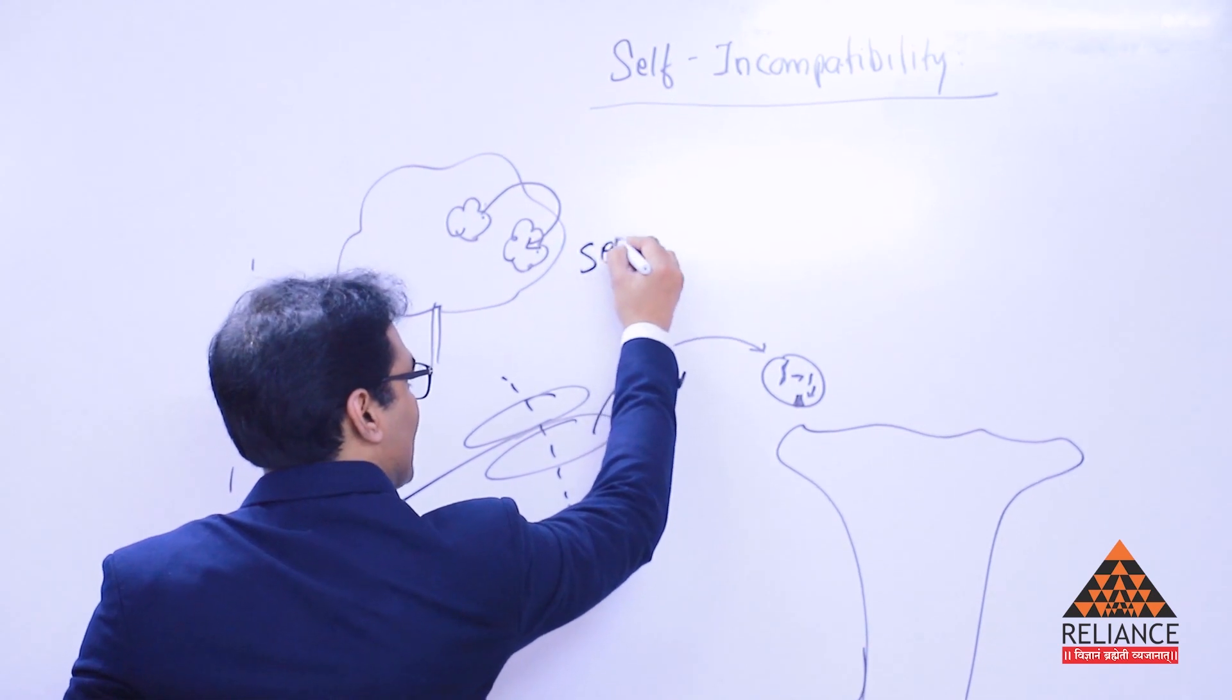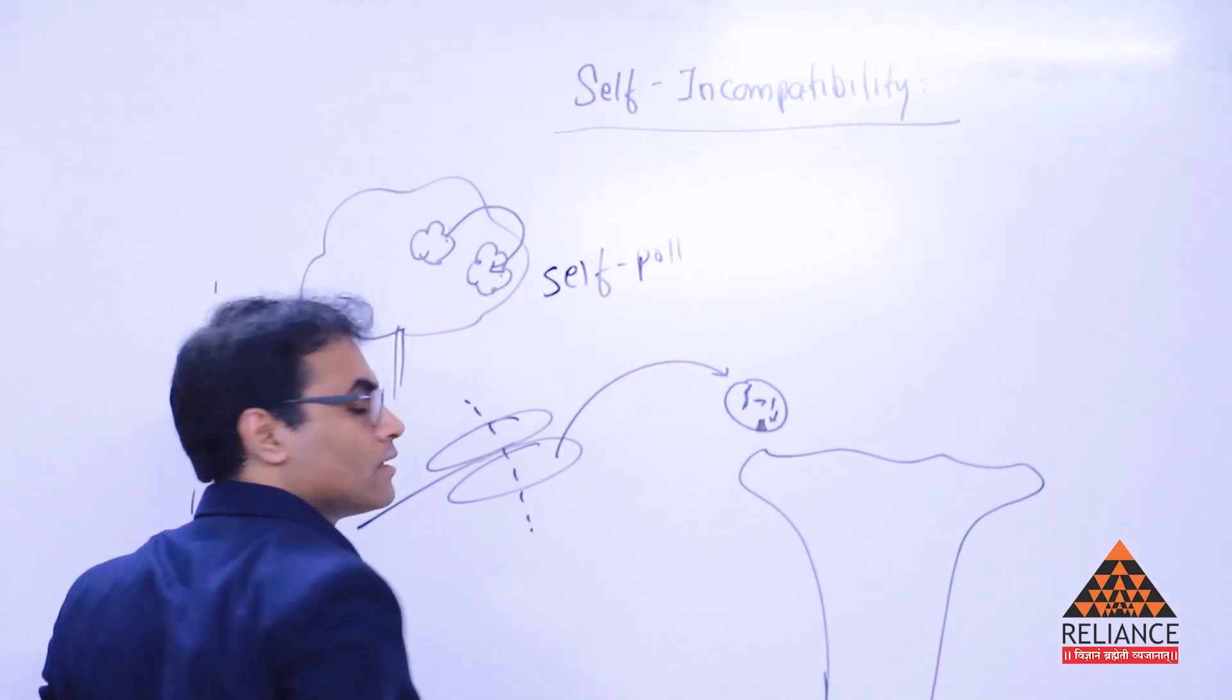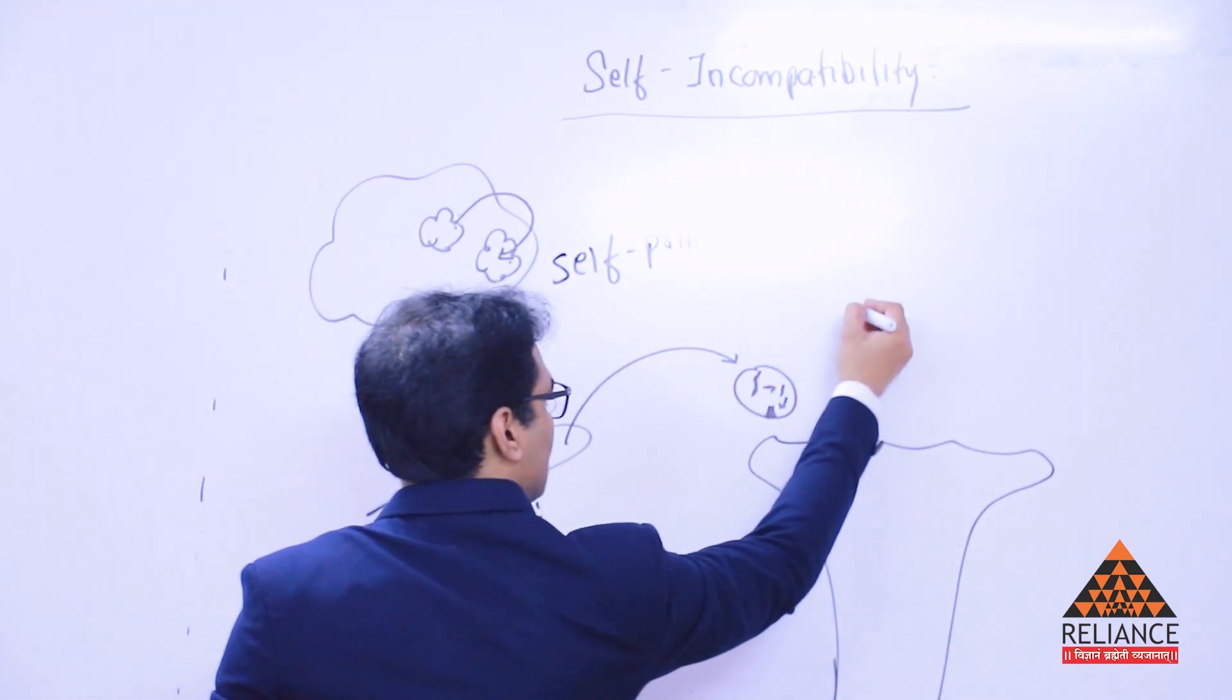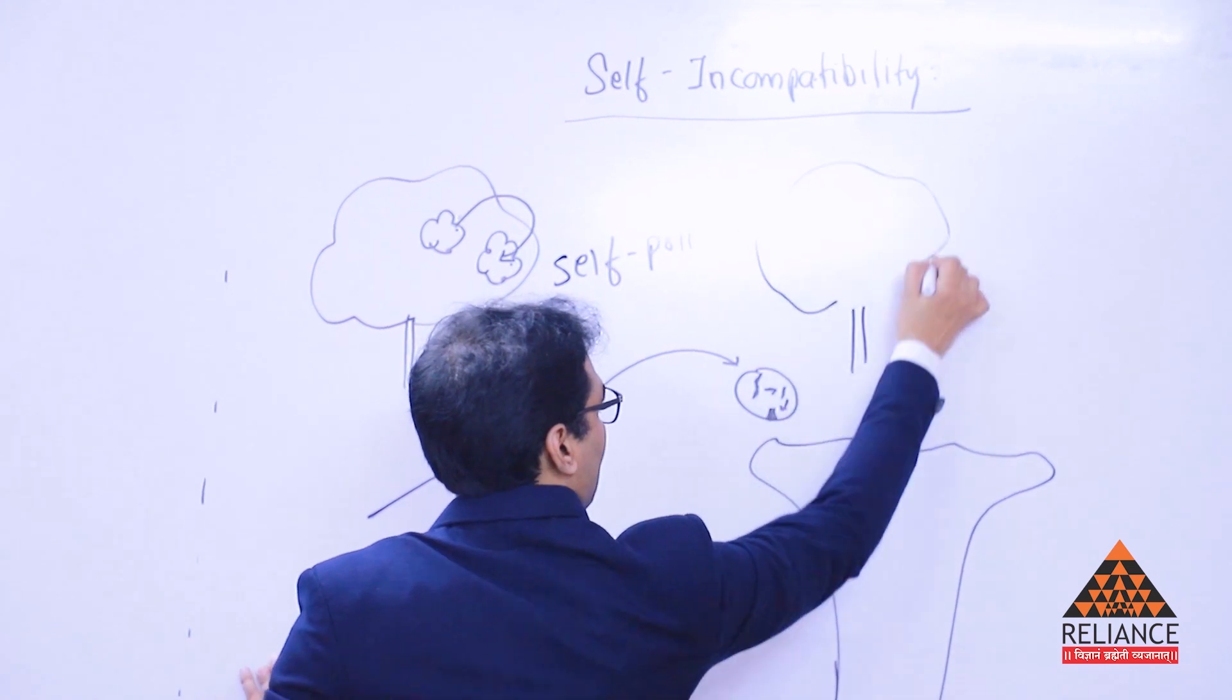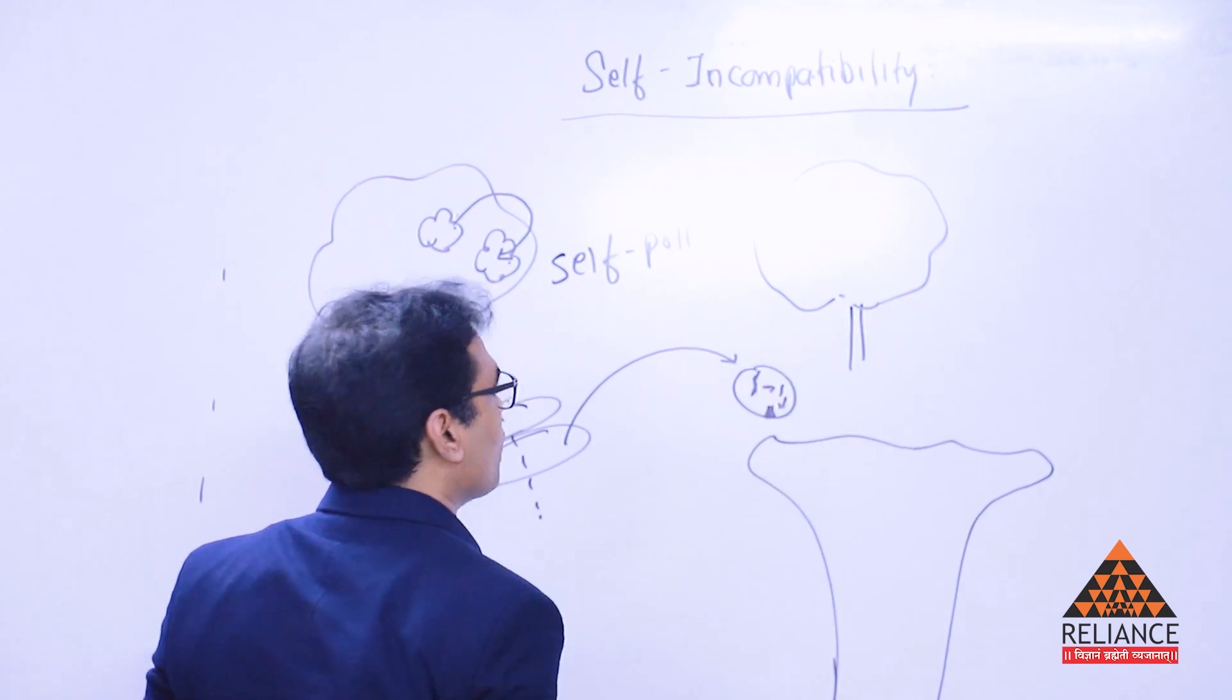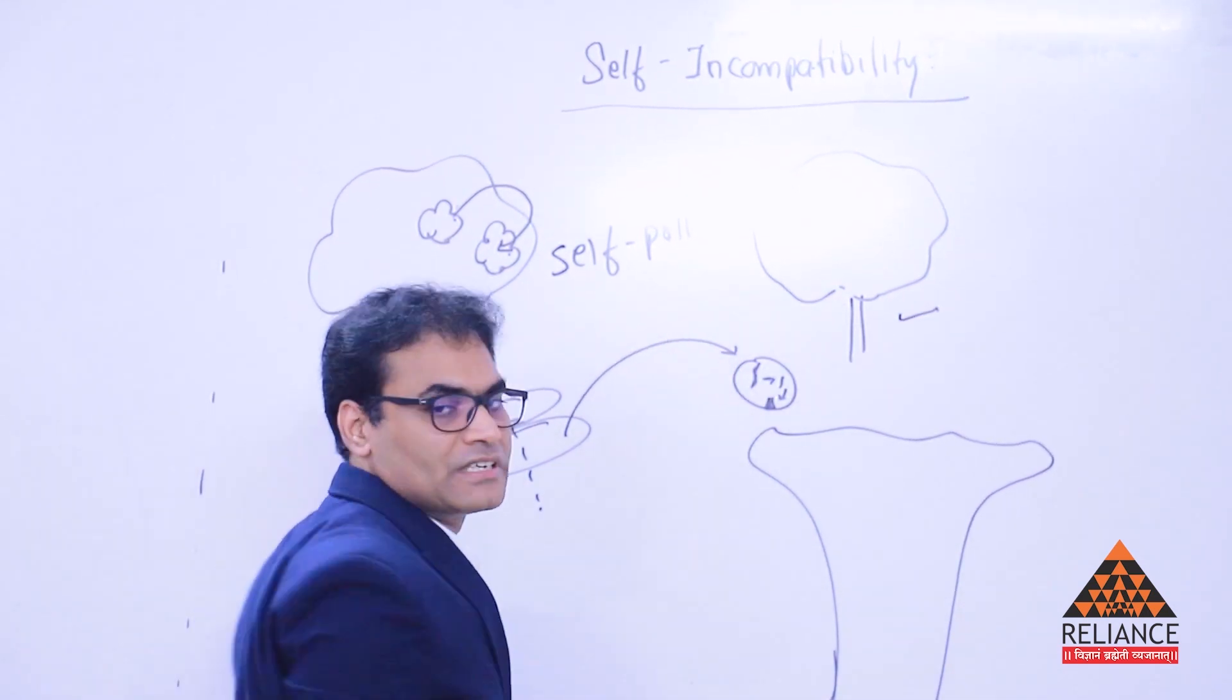Why self-pollination? Self-pollination because in the same plant itself pollination is happening. So this word is self-pollination. Now to stop this self-pollination, let's say this is one plant, let's say this is mango and the other one is also mango. This is also mango, this is also mango, but two different plants, two different trees.